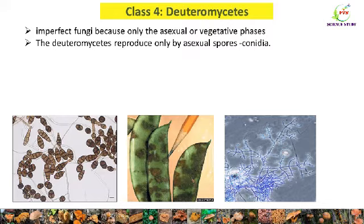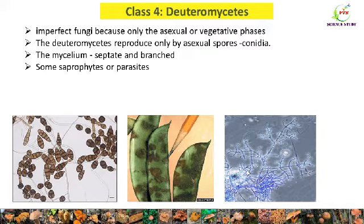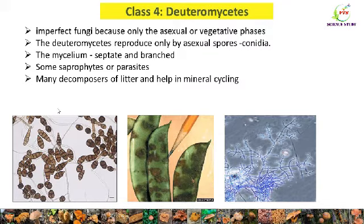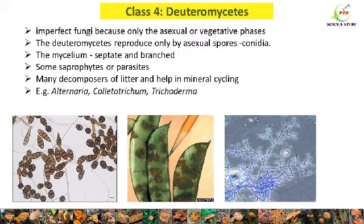Here you can see conidia, and the mycelium is septate and branched. Some members of Deuteromycetes are saprophytes or parasites. Many members are decomposers of leaf litter and help in mineral cycling and decomposition of organic matter. Some common examples of Deuteromycetes are Alternaria, Colletotrichum, and Trichoderma.